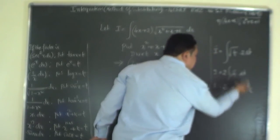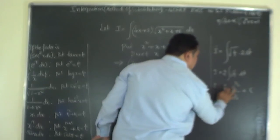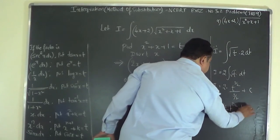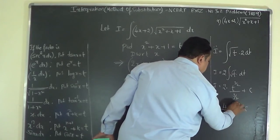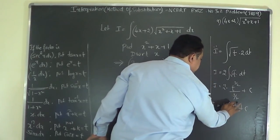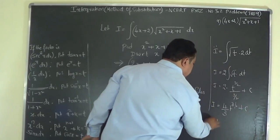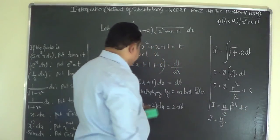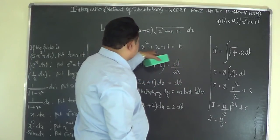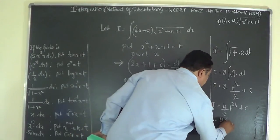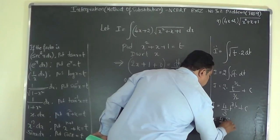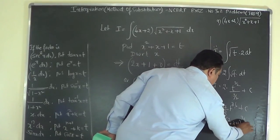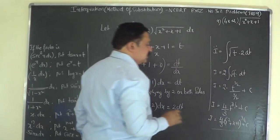Simplifying: 2 times 2/3 gives 4/3, so I equals (4/3)·t^(3/2). Back-substituting t = x²+x+1, the final answer is I equals (4/3)·(x²+x+1)^(3/2) plus C.